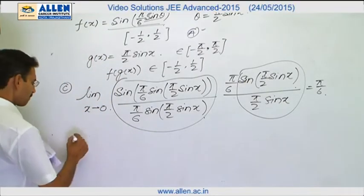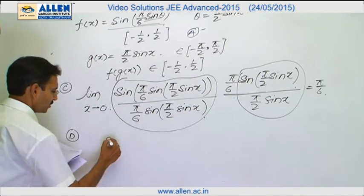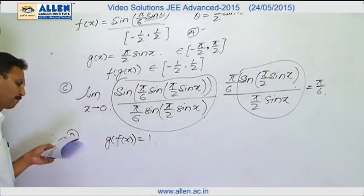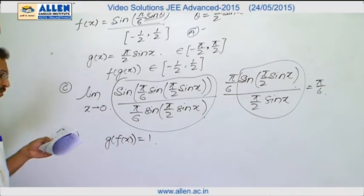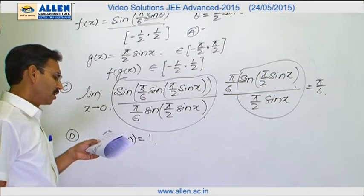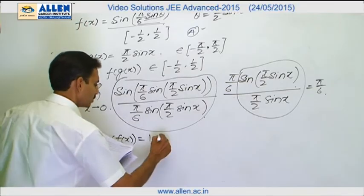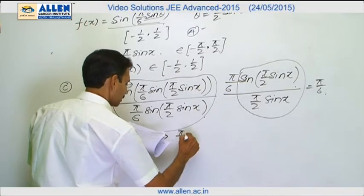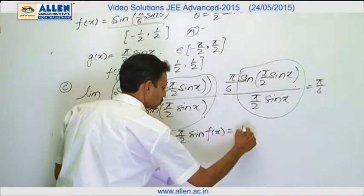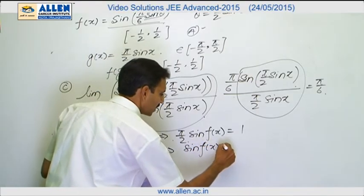For d, it is g(f(x)) equals to 1, g(f(x)) equals to 1. We have to verify whether there is any x which satisfies this equation. Now g(x) is pi by 2 sine x, so this equation will become pi by 2 sine f(x) equals to 1, which implies sine f(x) we are expecting to be 2 by pi.